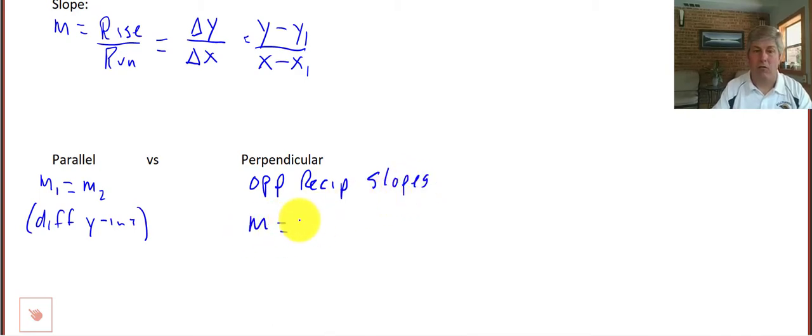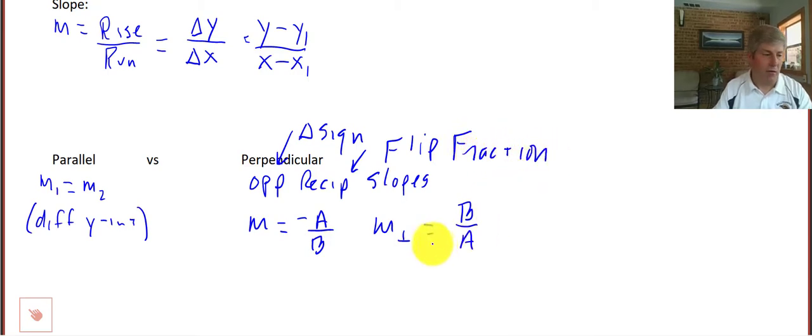So if we are in standard form or general form, if slope is the opposite of a over b, the slope of the perpendicular would be just b over a. Opposite reciprocal means we change the sign, and the reciprocal means we flip the fraction. So both of those things have to occur to have perpendicular lines. Another good way to memorize that is the product of the slopes of perpendicular lines is equal to negative one. So if we have a slope of two-thirds and a slope of negative three-halves, if we multiply those together, that equals negative one. The slopes of those two lines are perpendicular.